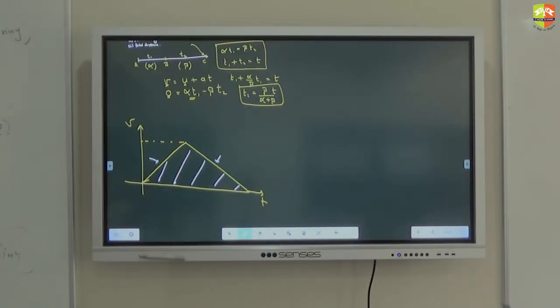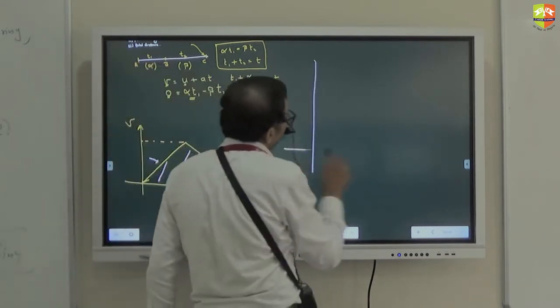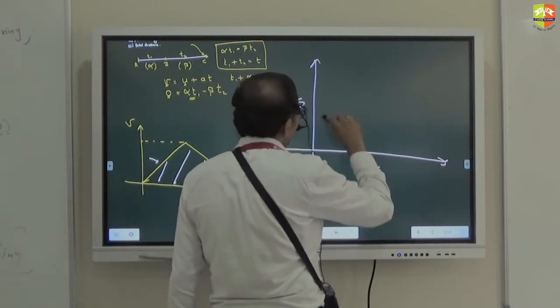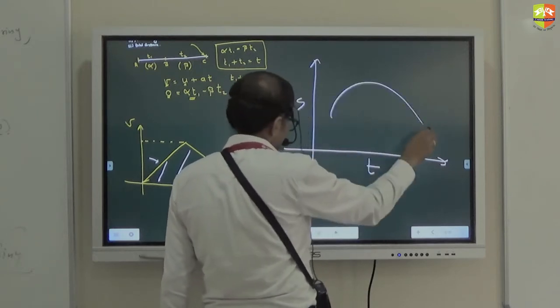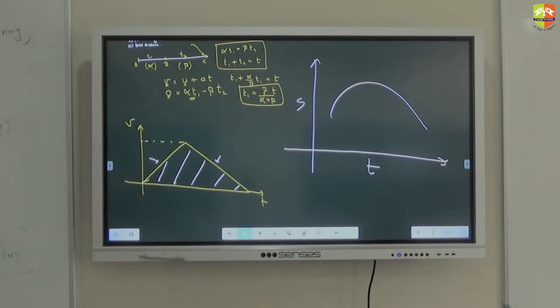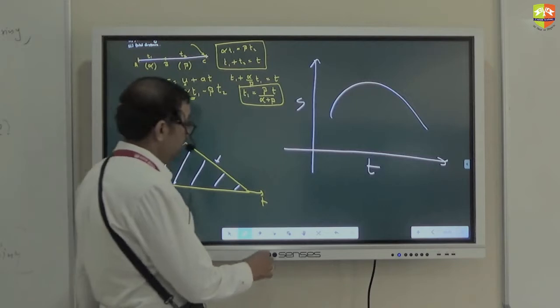Okay, shall we go to the next question? Ajab, tell me quickly, this kind of graph is possible or not? This is displacement time. Is this possible? Possible?